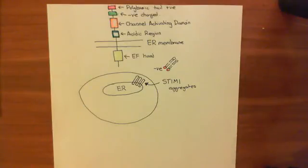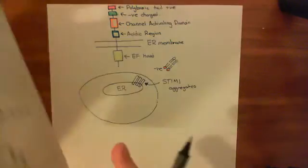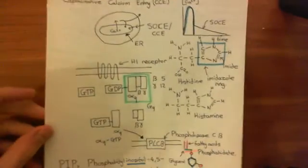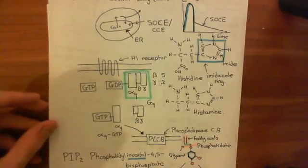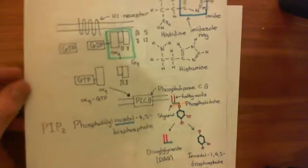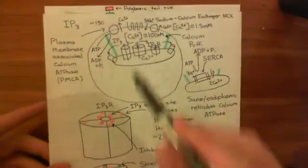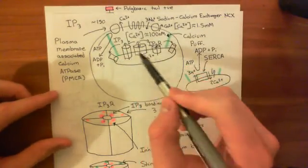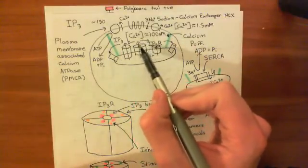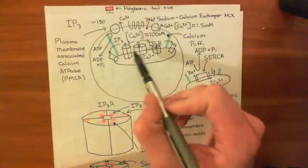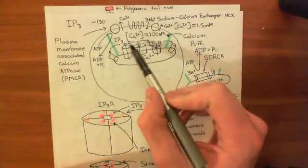Welcome to this next video on store-operated calcium entry, also known as capacitative calcium entry. Let's have a brief summary of where we've got to so far. We started off by stimulating the H1 receptor with histamine. That led to the production of IP3, inositol-1,4,5-trisphosphate. IP3 went up in a local compartment of the cell and caused calcium release from the endoplasmic reticulum into that portion of the cell.